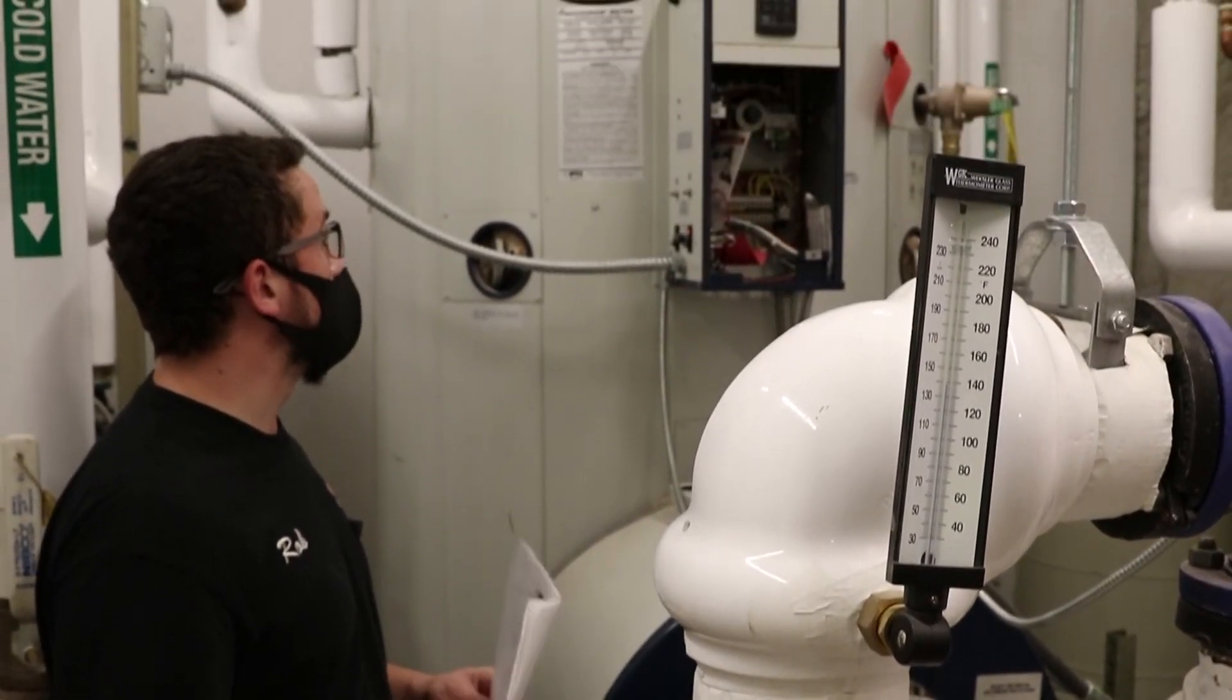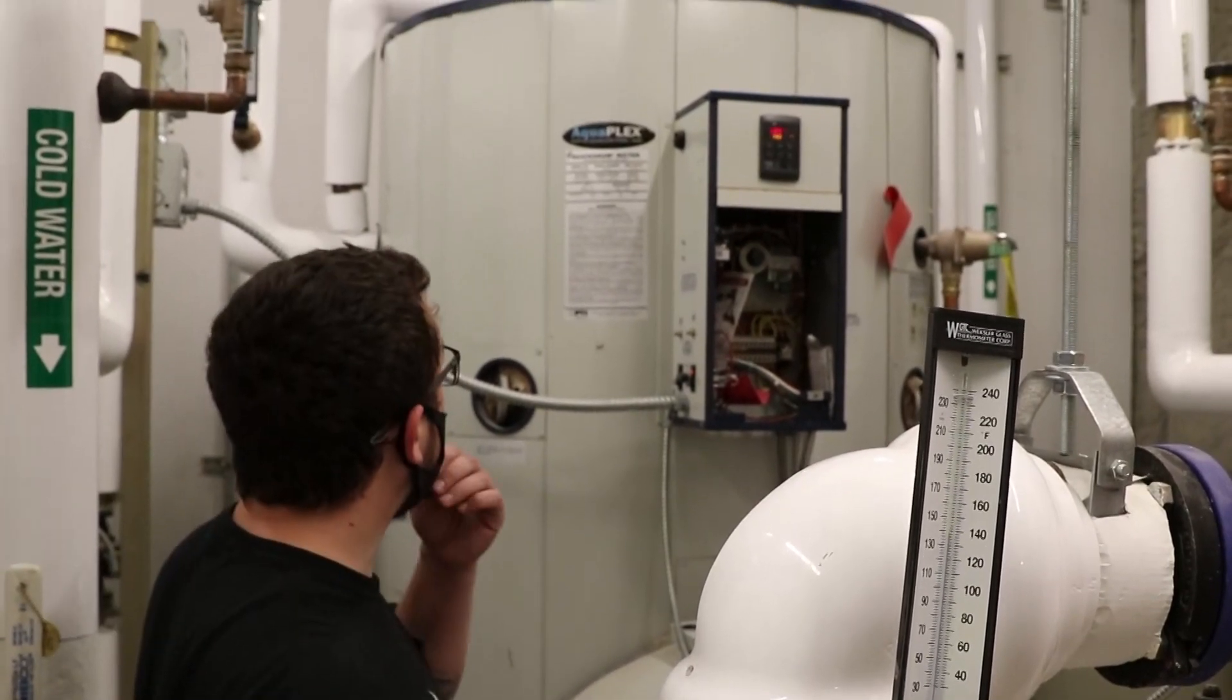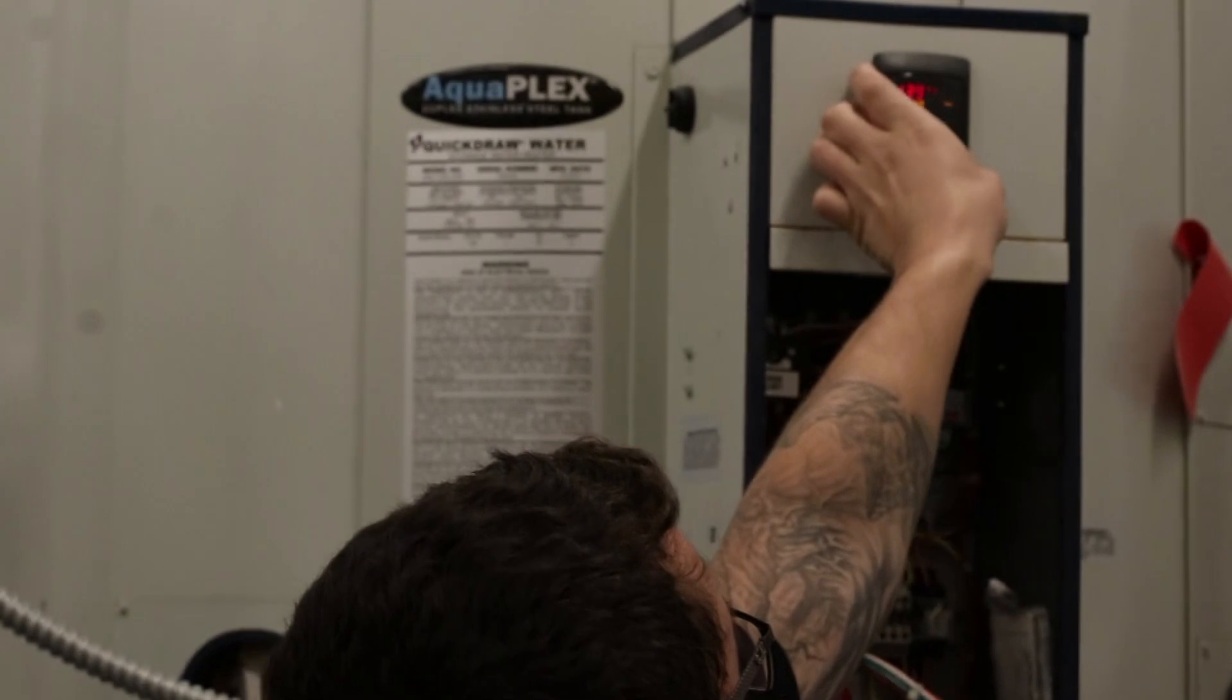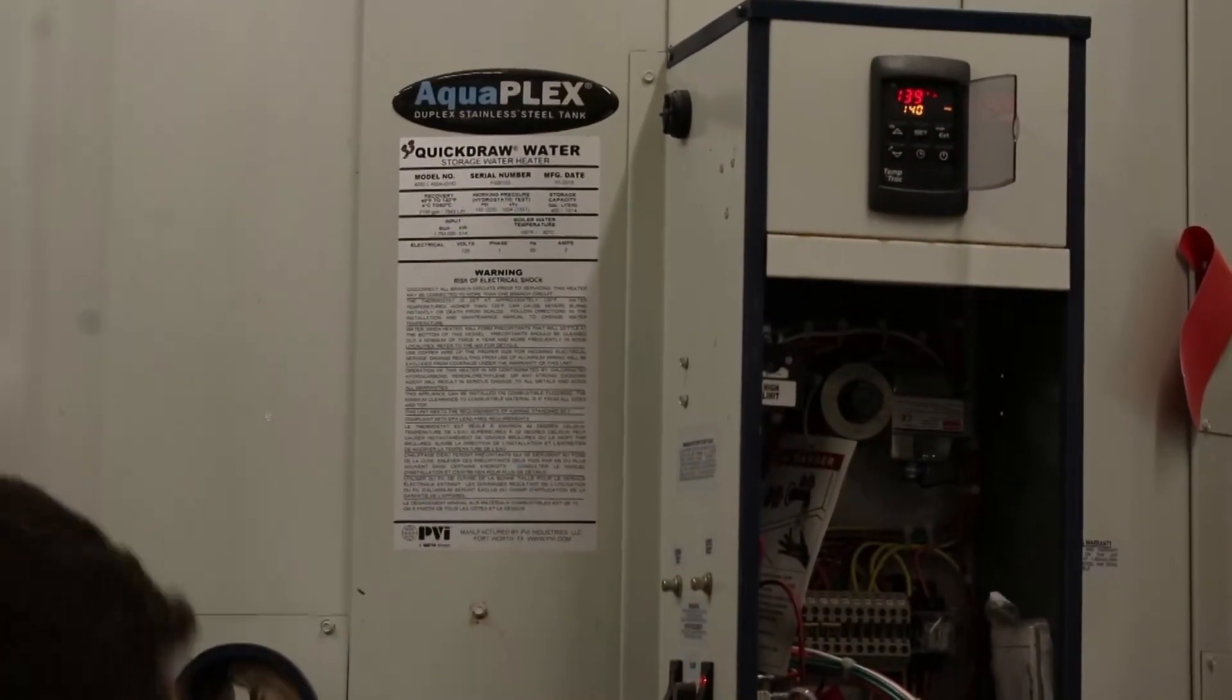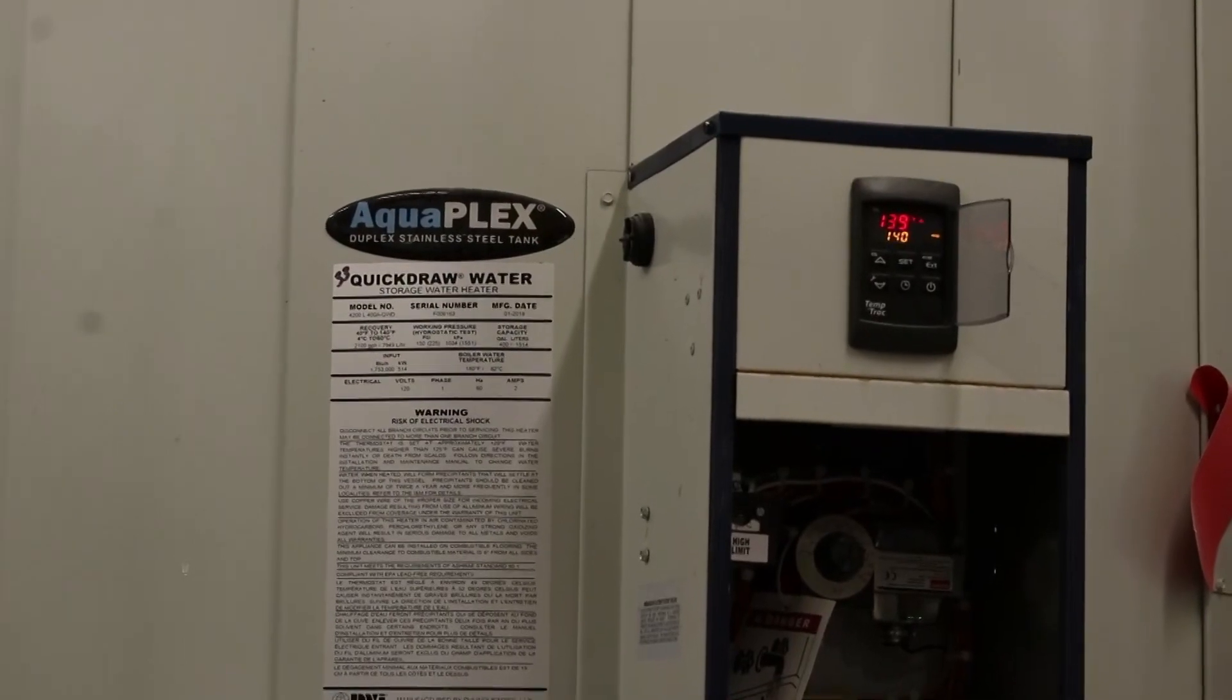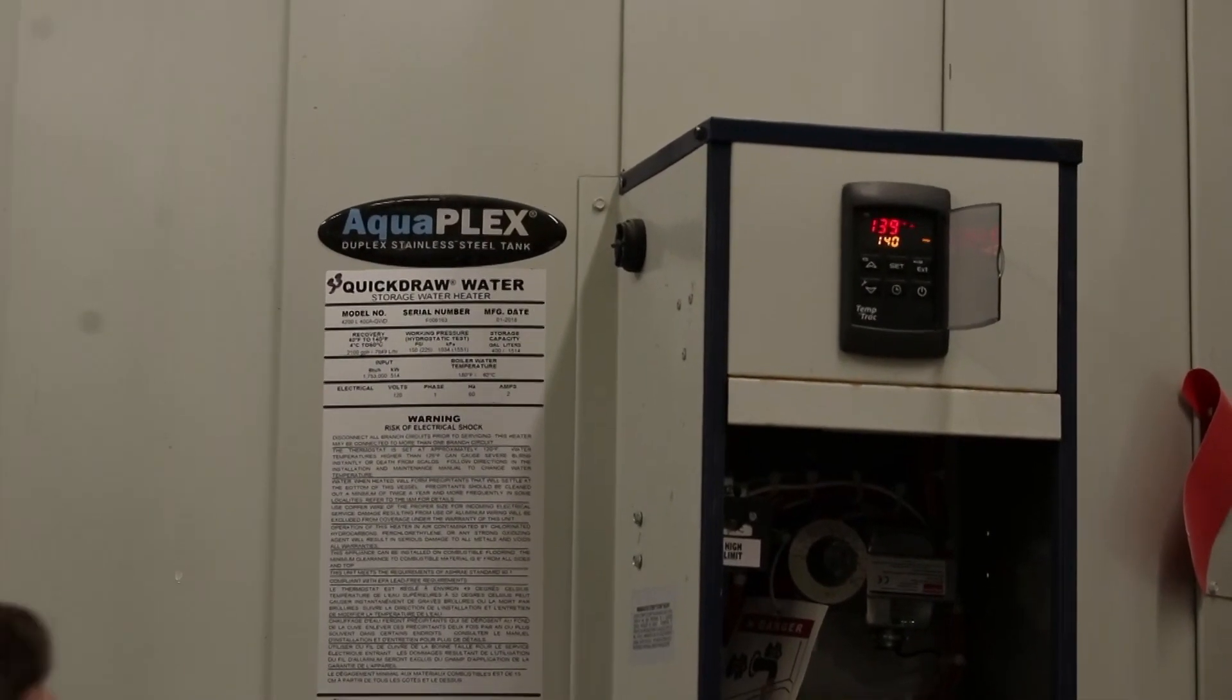So you use a few different controls to accomplish this. The main control you have is your TempTrap controller. This contains the parameter ST1. ST1 is your primary set point. On these heaters, they're set to 140 degrees.